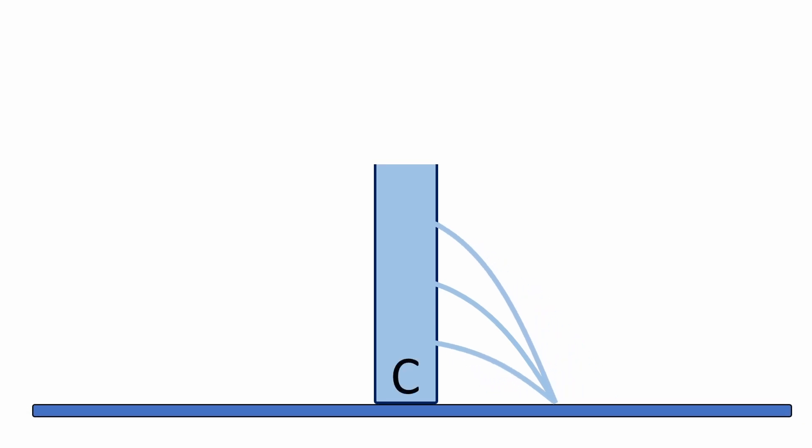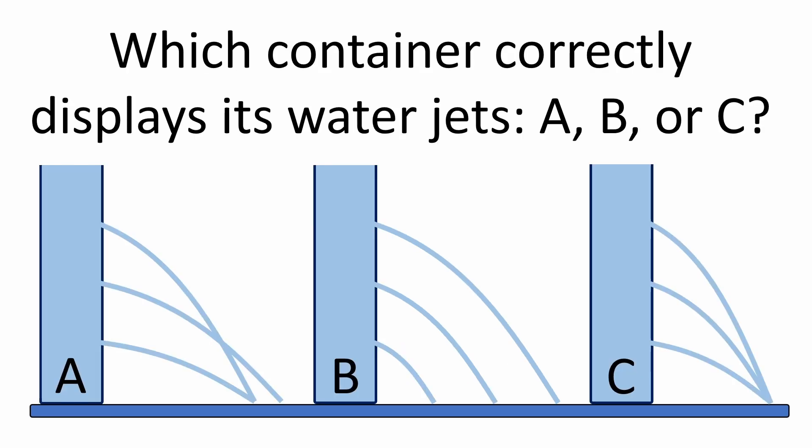Finally, for option C, the water jets from all three holes land in the same spot. So, which container correctly displays its water jets? A, B, or C? Before I reveal the solution, pause the video and see if you can figure out the answer to this fun little physics brain teaser.